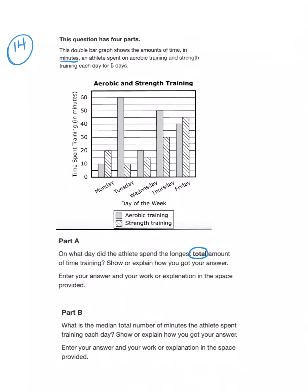Looking at Monday, aerobic is 10 and strength is 20, so that's a total of 30 minutes. Tuesday, aerobic is 60 and strength is 10, so that's 70 minutes. Wednesday, aerobic is 20 and strength is—be careful—15, so 15 plus 20 gives me 35. Thursday we have 50 and 30, so that's 80. Friday we have 40 and, be careful with your lines, this is 45, so 40 and 45 gives me 85. The total number of minutes that's the highest for the week is Friday.